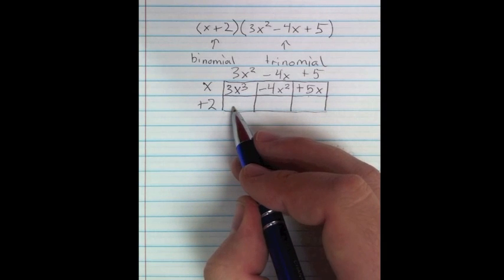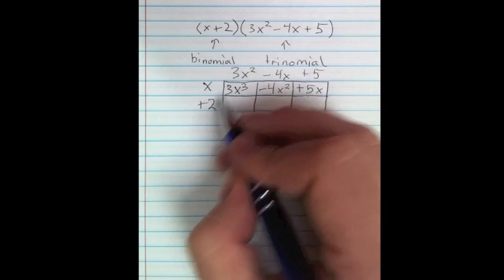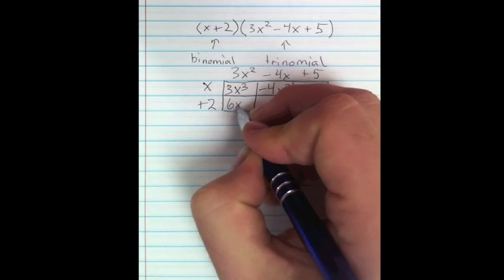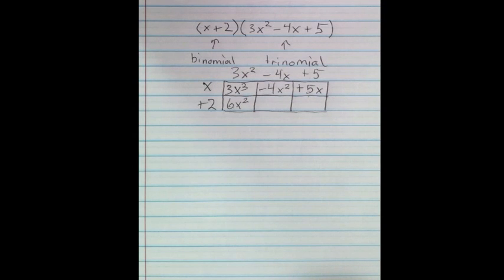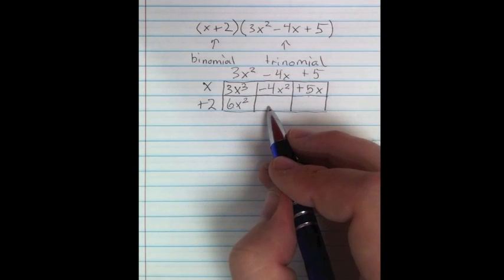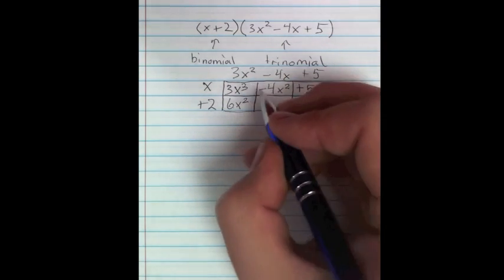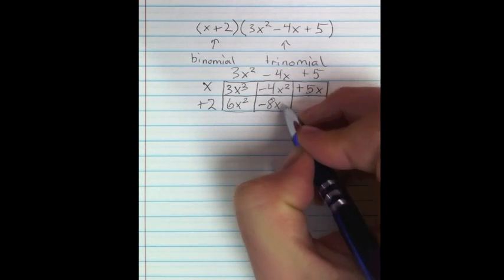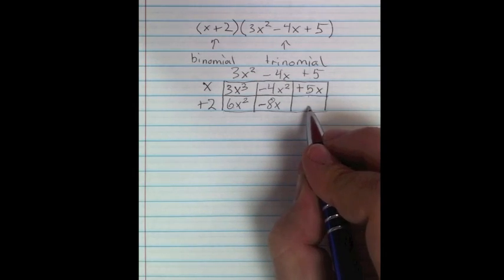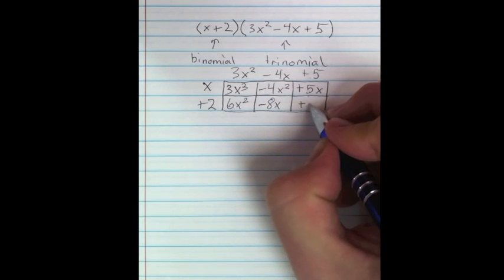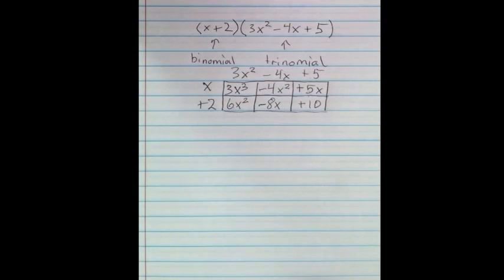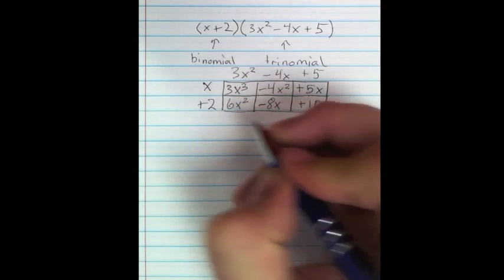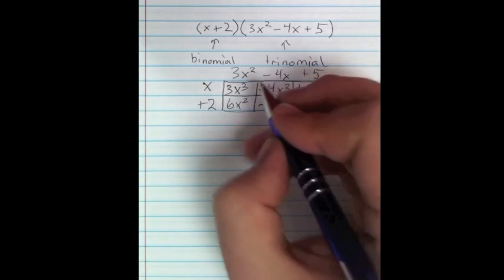In the bottom left, we're going to cross 2 with 3x squared, and we get 6x squared. Then next to it, 2 times a negative 4x gives us negative 8x. And in the last box, we're going to have 2 times 5, which is positive 10.